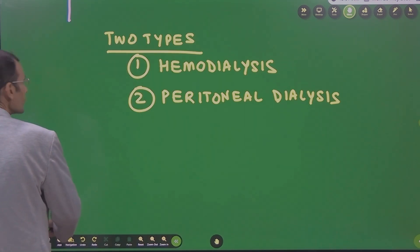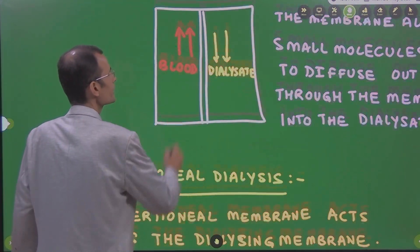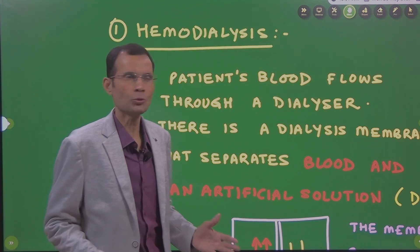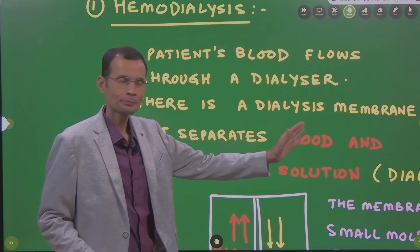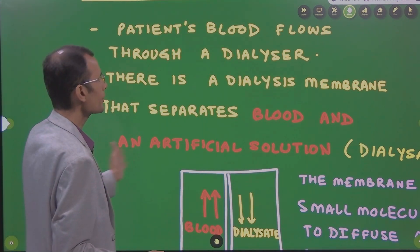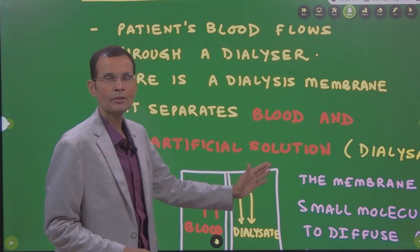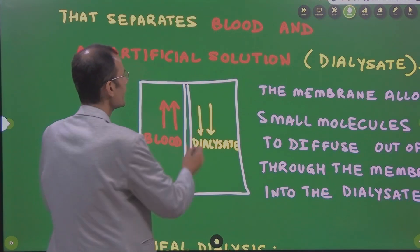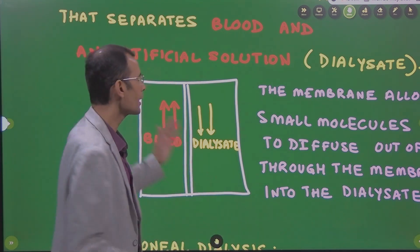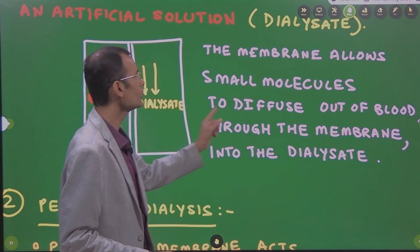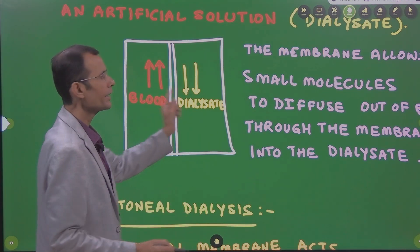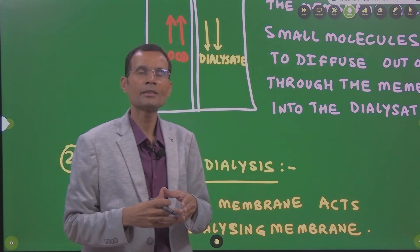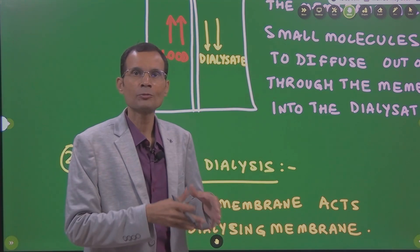Although they perform the same function, the procedure differs slightly. In hemodialysis — hemo meaning blood — the patient's blood flows through the dialyzer. There is a dialysis membrane that separates the blood and an artificial solution. As you can see, blood flows through the machine and the dialysate flows through it as well, separated by a selectively permeable membrane. The membrane allows small molecules to diffuse out of the blood through the membrane into the dialysate, separating the substances to be eliminated from those to be retained in the blood.